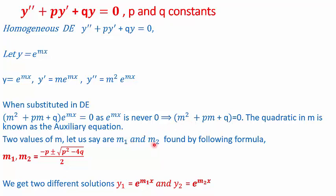We solve the auxiliary equation for the roots of m. Let the two roots be m1 and m2. We use the formula m = (−b ± √(b²−4ac)) / 2a. For us, a = 1, b = p, and c = q. So the two roots m1 and m2 come from (−p ± √(p²−4q)) / 2. A lot depends on the value of p²−4q.